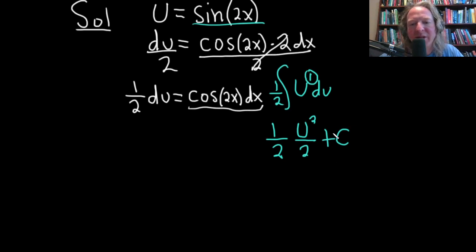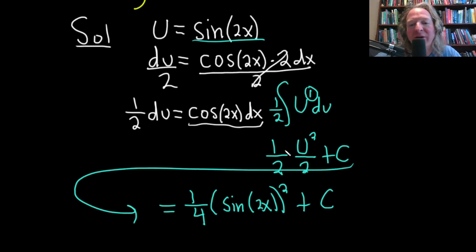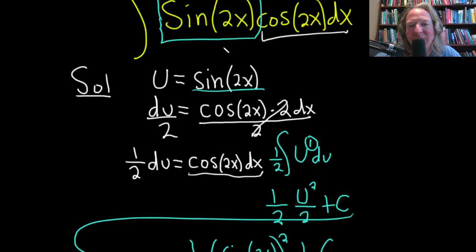So this is going to be equal to, I'm just going to come over here and give myself some more room. 2 times 2 is 4. So this is 1 fourth. And then u was the sine function. So it's really sine 2x quantity squared, like that, plus c. You want to go back to the original variable of integration, which was x.